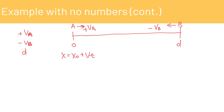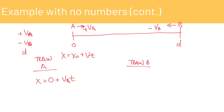For both equations, x is the meeting point. Setting up train A: x equals zero plus V_A times T, so x equals V_A times T. Train B starts at D and moves at velocity V_B in the negative direction, so x equals D minus V_B times T. We set these two equations equal to each other.